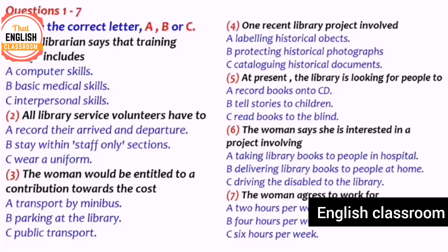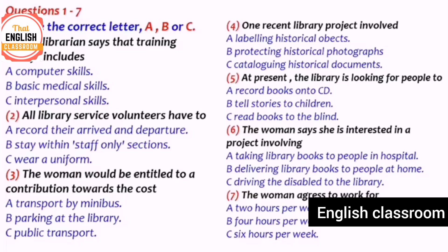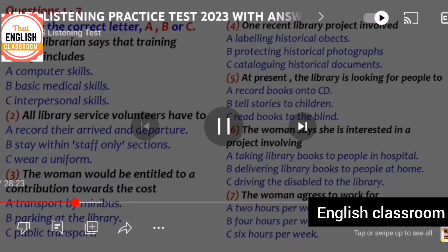The librarian asks volunteers to commit to a regular period each week. The woman says she could probably do five or six hours, but the librarian advises not to take on too much. The librarian says they need someone for a couple of afternoons from two to four — four hours altogether per week. So the answer to question seven is B — four hours per week.